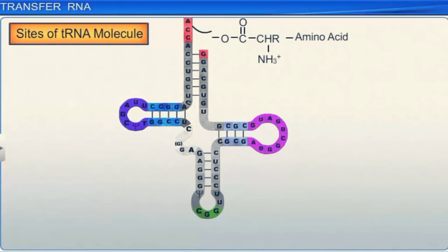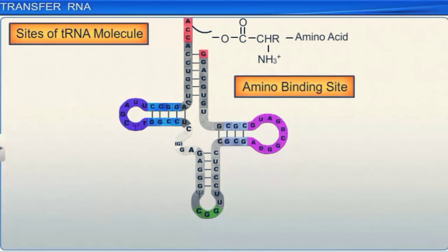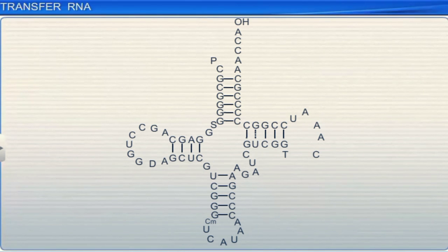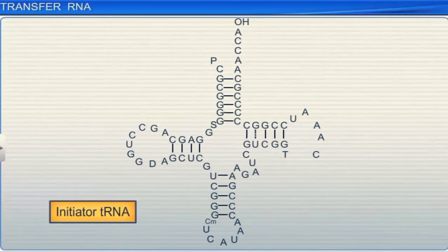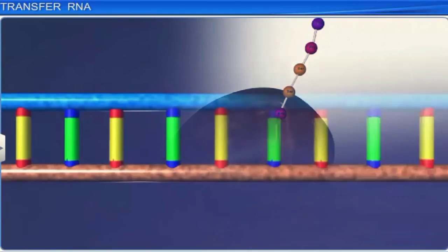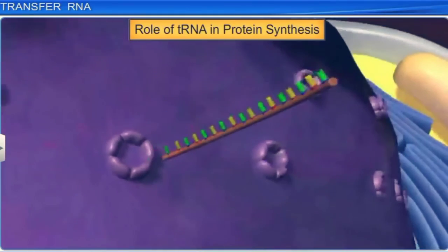Did you know that there is a specific tRNA for each of the 20 amino acids found in the human body? Also, there is a specific tRNA called initiator tRNA, which initiates the process of protein synthesis. However, there are no tRNAs for stop codons. tRNA is thus an important molecule, and it plays a vital role in protein synthesis by bringing amino acids to the mRNA template in the cytoplasm.